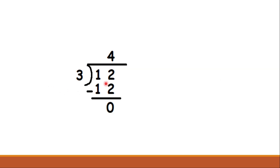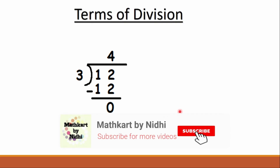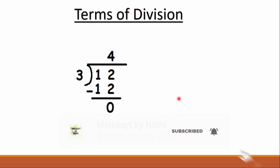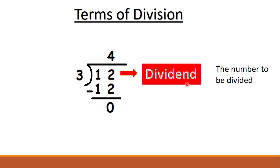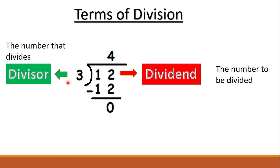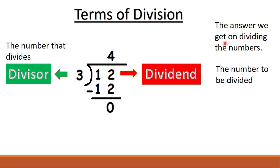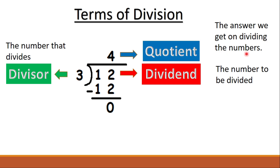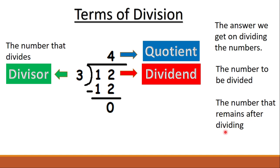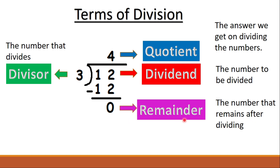Let us learn the terms of division. The number to be divided is called the dividend — here we have 12 as the dividend. The number that divides is known as the divisor — here we have 3 as the divisor. The answer we get on dividing the numbers is known as the quotient — here we have 4 as the quotient.